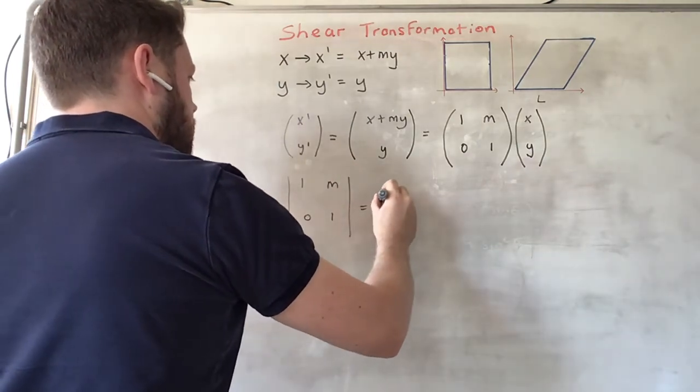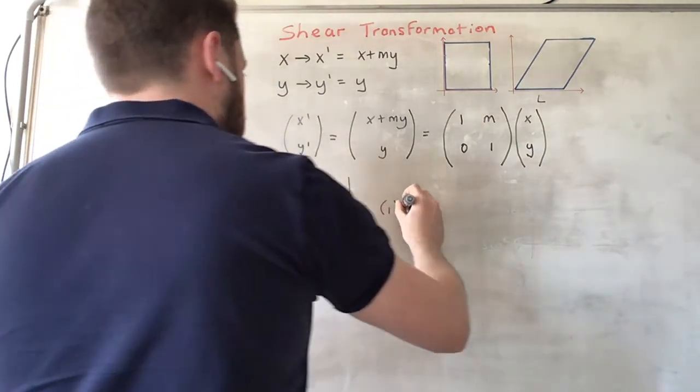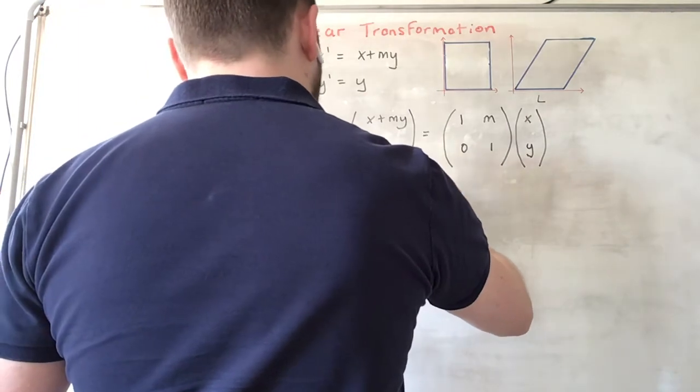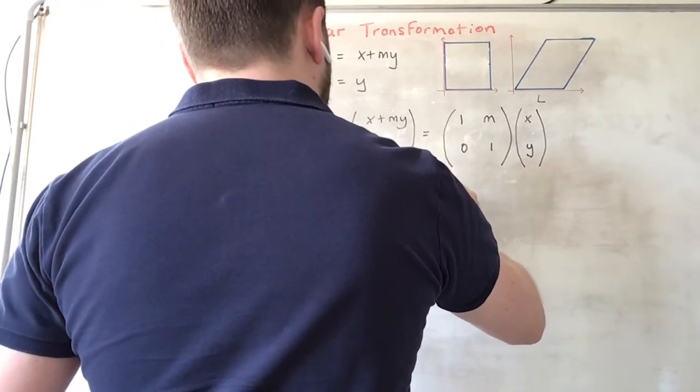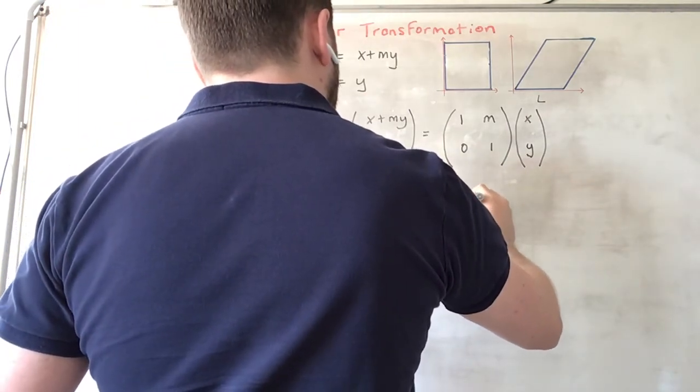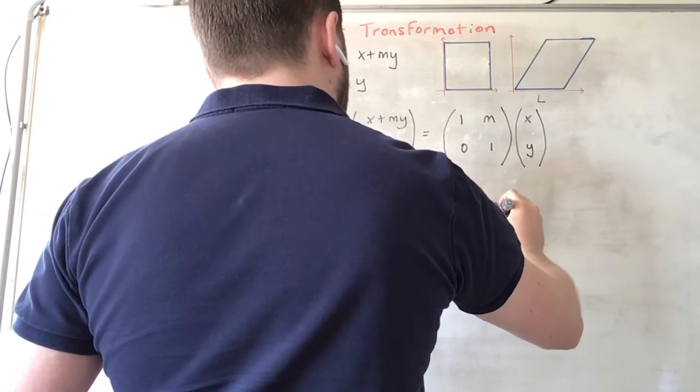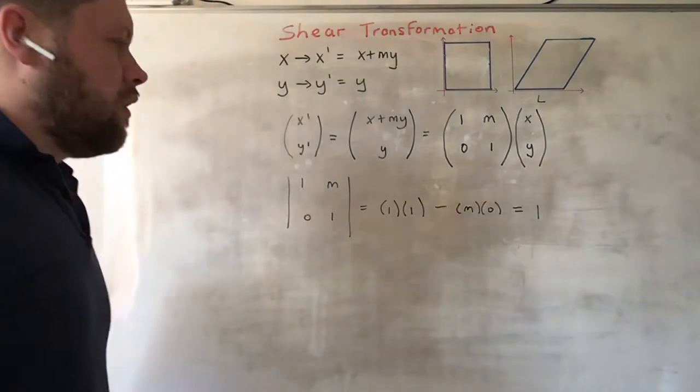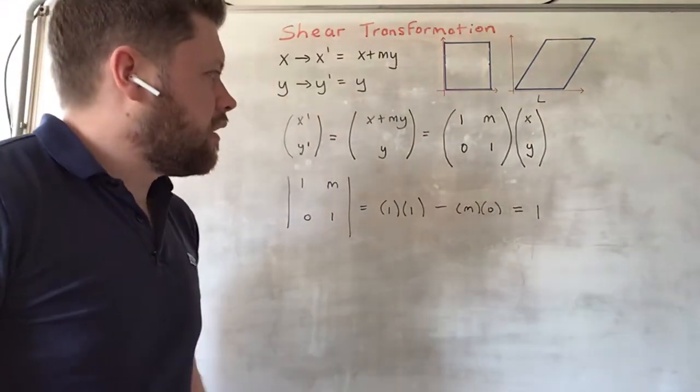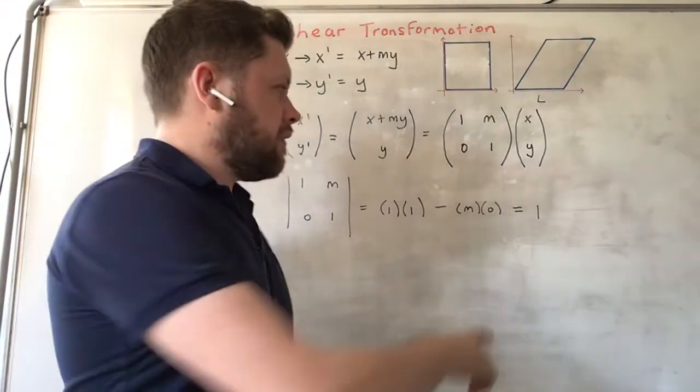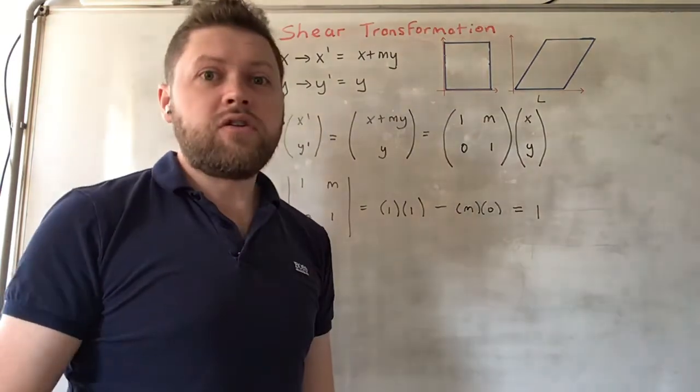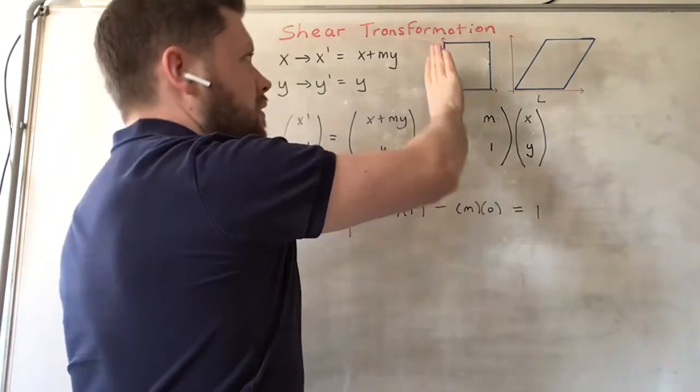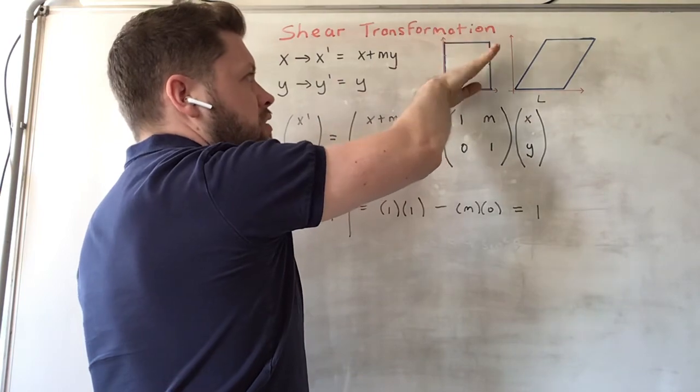And it's 1 times 1 minus m times 0, which is 1. So you can see that the area is scaled by 1, which means it's unchanged.